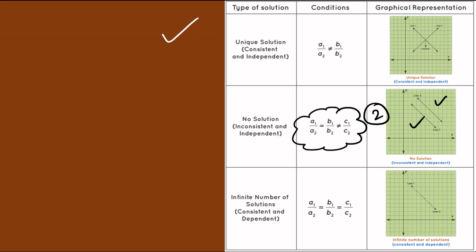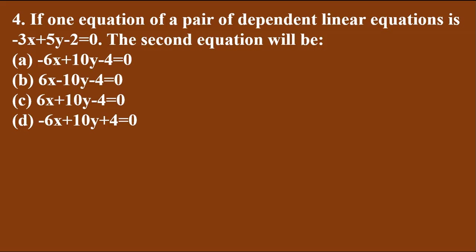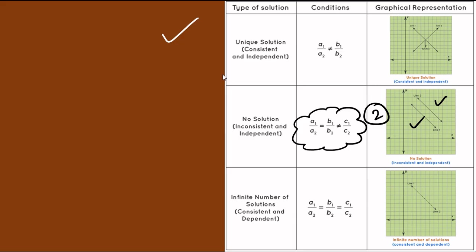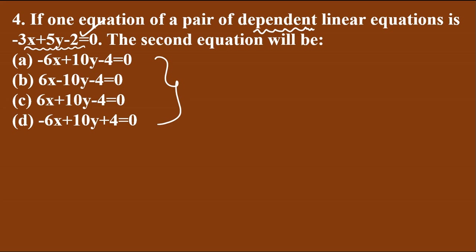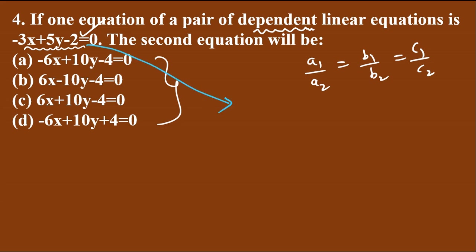Next problem: one equation of a pair of dependent linear equations is given. For dependent equations, the condition is a1/a2 = b1/b2 = c1/c2. Comparing the given equation: a1 = −3, b1 = 5, c1 = −2. We now check the answer options to find which second equation satisfies this dependent condition.